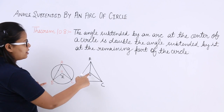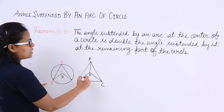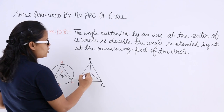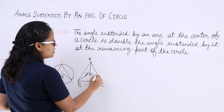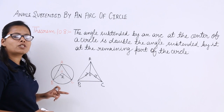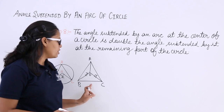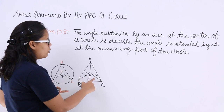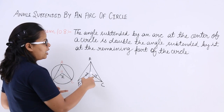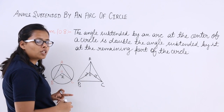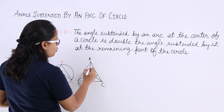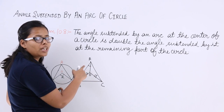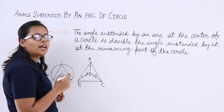In this figure with center O, triangles BOC, AOB, and AOC are all isosceles triangles, because OA, OB, and OC are all equal to R (radii of the circle). When two sides of a triangle are equal, that triangle is an isosceles triangle. So triangles BOC, AOB, and AOC are all isosceles triangles.